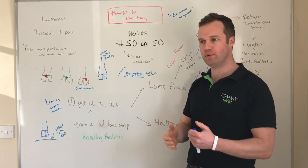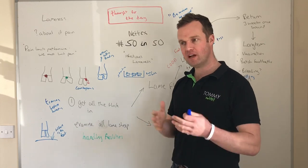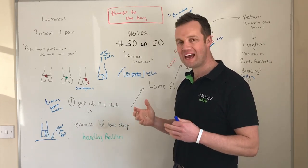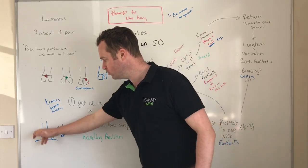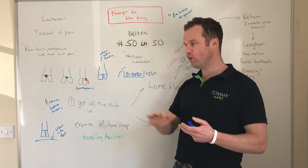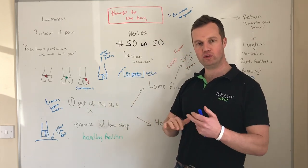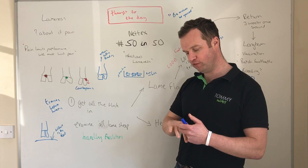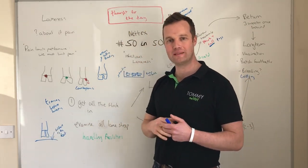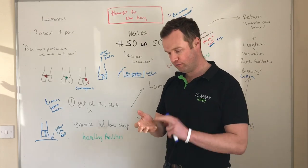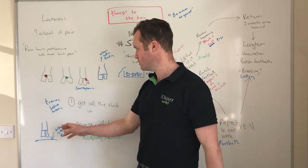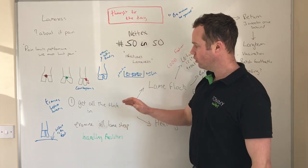When looking at a lameness control plan, the best time is before housing or before stress, though it can be done at any stage. Housing is a particular risk because these conditions are contagious — spreading from ewe to ewe — and wet, damp conditions worsen the problem. Getting housing right with fresh air, plenty of bedding, and good drainage all helps reduce the risk of spread.